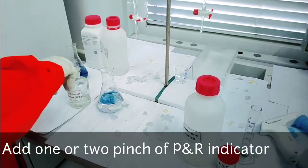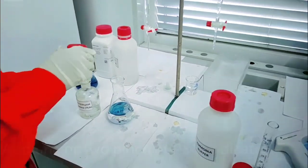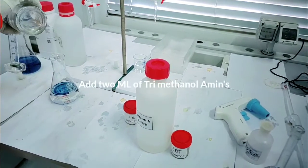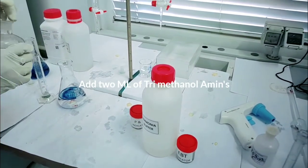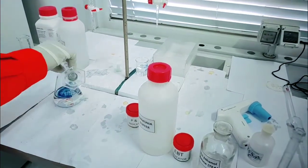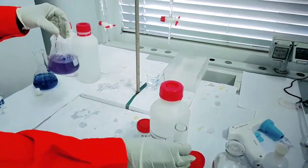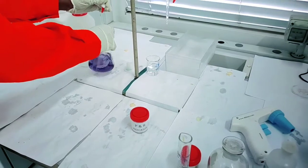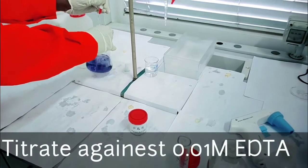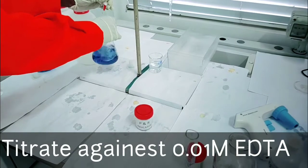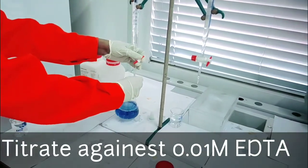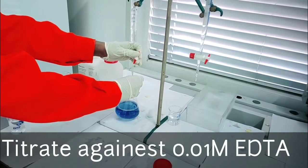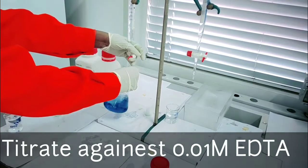Add P&R indicator, Patton and Reeder indicator. Add 2 ml of TEA, triethanolamine. Titrate against 0.01M EDTA, ethylenediamine tetraacetic acid.